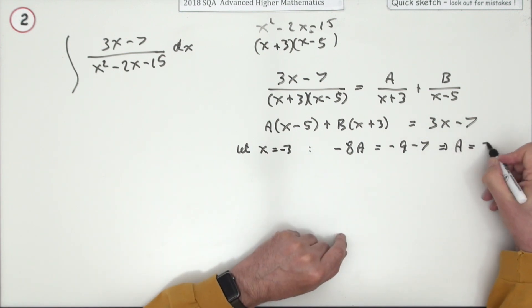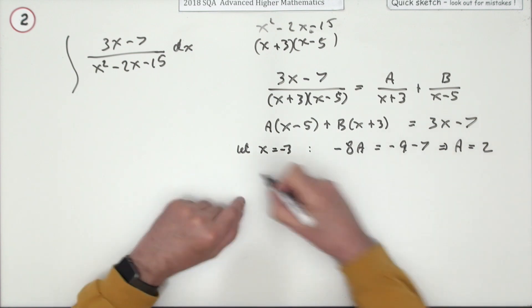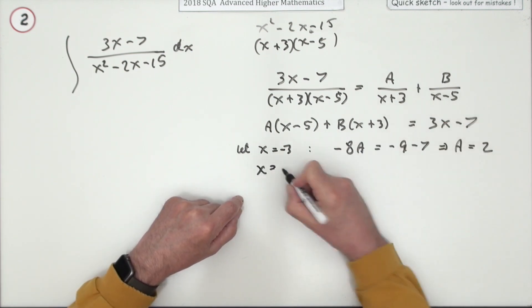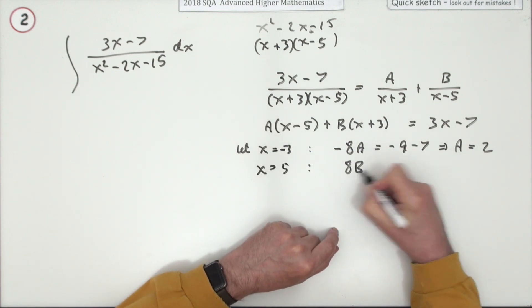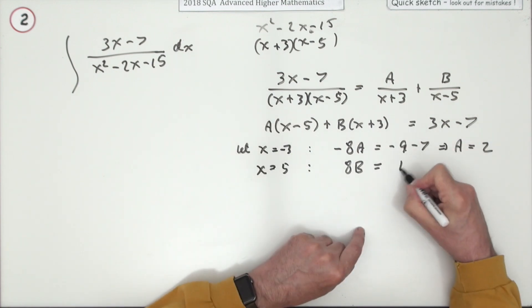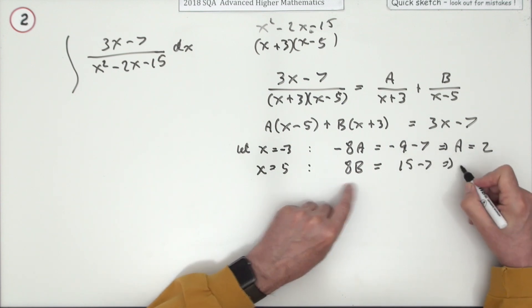And I'm going to let x equal 5. That'll knock out the A and give me 8B, and that'll be 15 - 7, which is 8. So B is going to be 1.